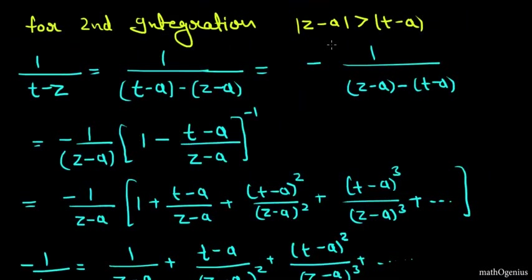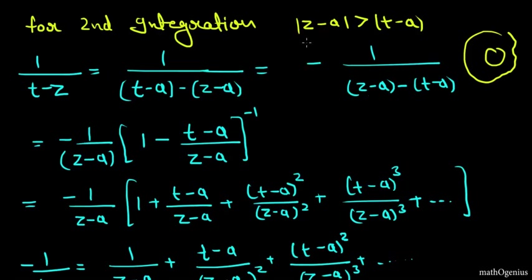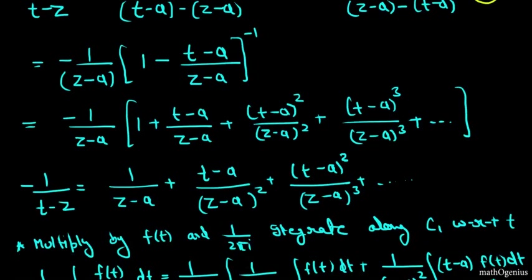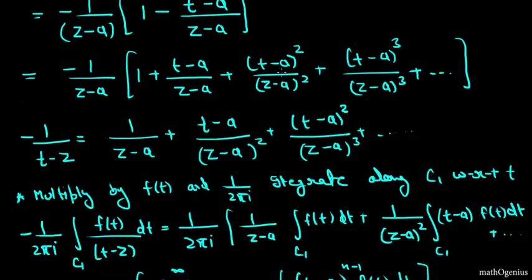For the second integral over C1, the modulus of (z minus a) is greater than the modulus of (t minus a) because C1 is encircled by gamma. We again write 1/(t minus z), add and subtract a, but this time take (z minus a) outside since it is the greater quantity. In Laurent series problems, always take the greater term outside — this is critical when the problem specifies regions like |z| > 2 or |z| < 2.